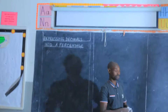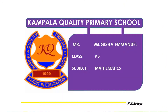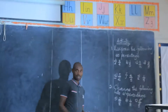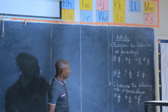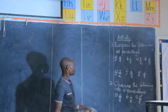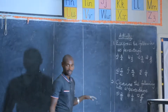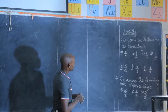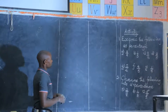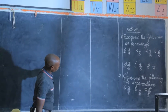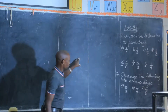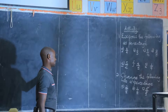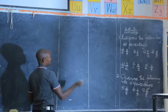Welcome, learners, to yet another lesson. In our previous lesson I left you with an activity of ten numbers. I am going to go through six numbers — the ones which I think are a little bit tricky — then I will usher us into a new lesson. We are going to go through number one (a), then (e), then (g), then number two (a), (b), (c), then we shall do corrections.